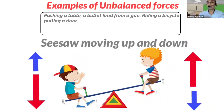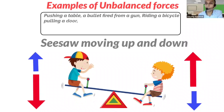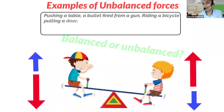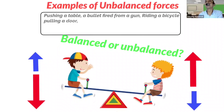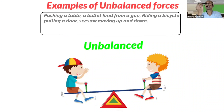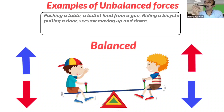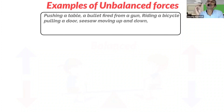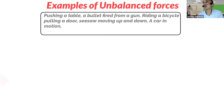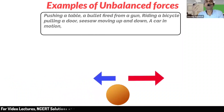A seesaw moving up and down — balanced or unbalanced? Unbalanced. But when the seesaw is straight, that is balanced. A car in motion — unbalanced. A ball moving on the floor — unbalanced.